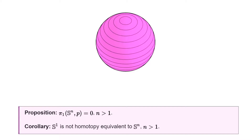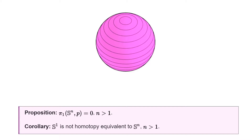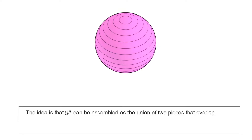This proposition appeared already in one of our previous videos. Back then we provided a non-completely rigorous argument that went basically like this: if we remove a point from Sn, we are left with Rn. This means that Sn can be chopped into two pieces, Rn and a point, and each of these pieces is very simple and has no fundamental group. In this video, we will implement this idea in a completely rigorous way.